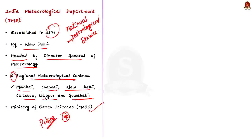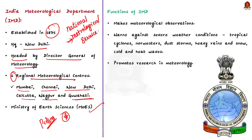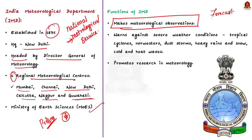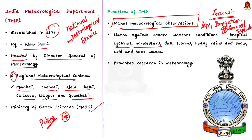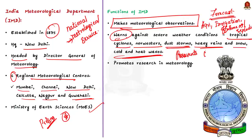Now, the functions of the IMD: firstly, the IMD makes meteorological observations, and its forecasts help in the optimum functioning of weather-sensitive activities like agriculture, irrigation, shipping, aviation, and offshore oil exploration. Secondly, the IMD warns against severe weather phenomena like tropical cyclones, nor'westers, dust storms, heavy rains and snow, and cold and heat waves — as we saw in this news article — aimed at preventing destruction of life and property. Finally, the IMD conducts and promotes research in meteorology and allied disciplines to fine-tune its weather forecasting and information gathering capability.